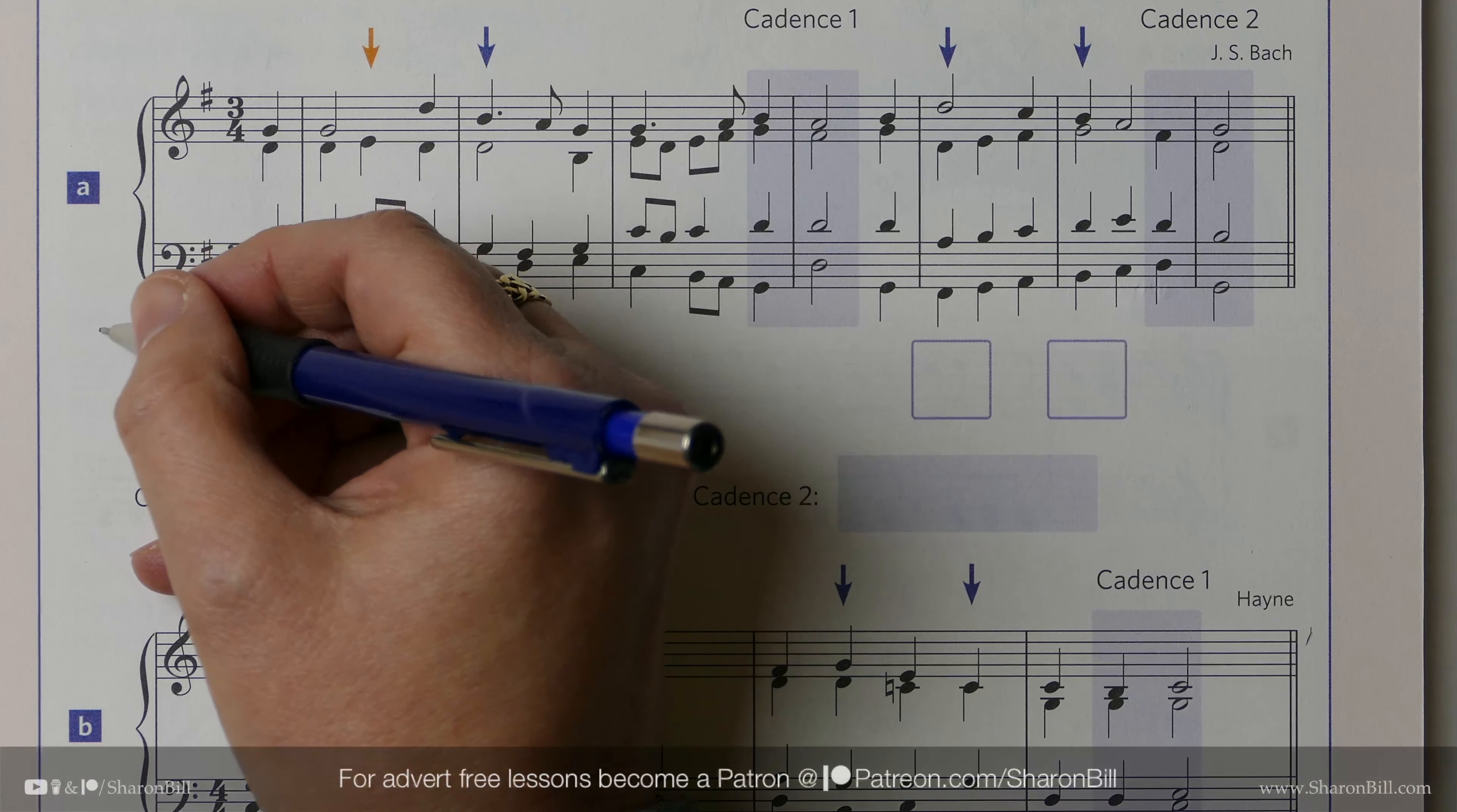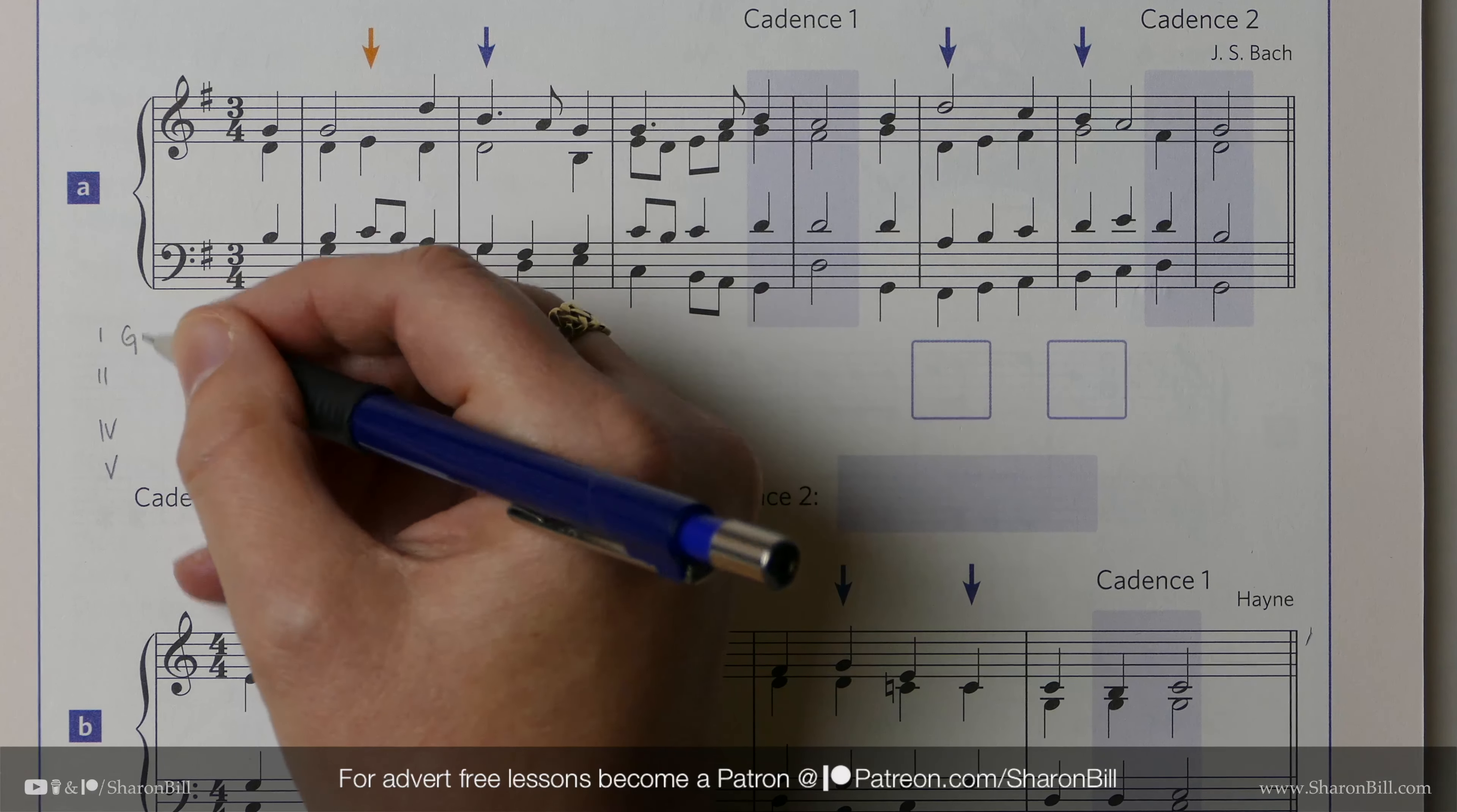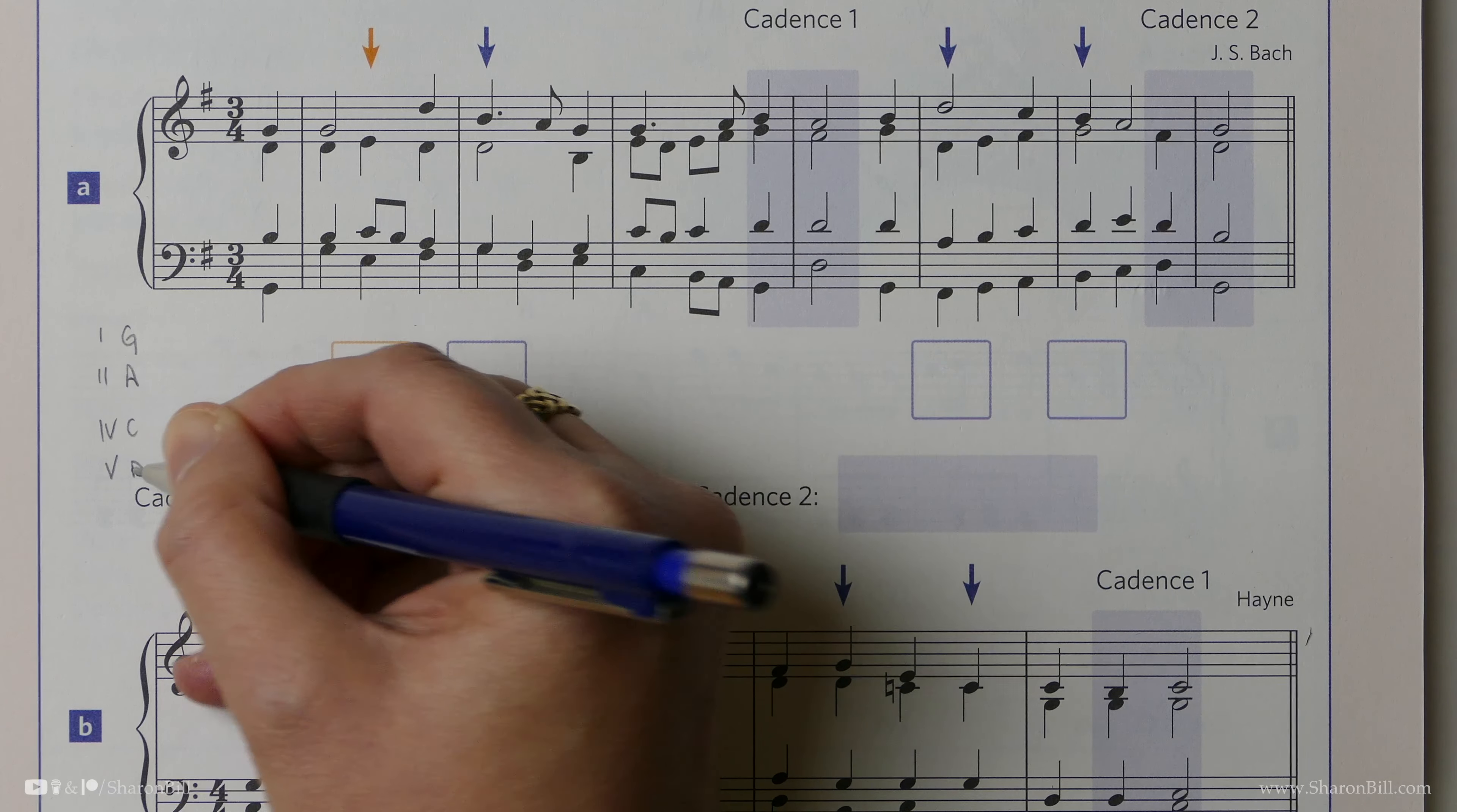So we are looking at chords 1, 2, 4, and 5. If we're in G major, chord 1 is built on G. Then stepping up, we have A. We missed chord 3 out. We're not looking at that. And then we have C and D.